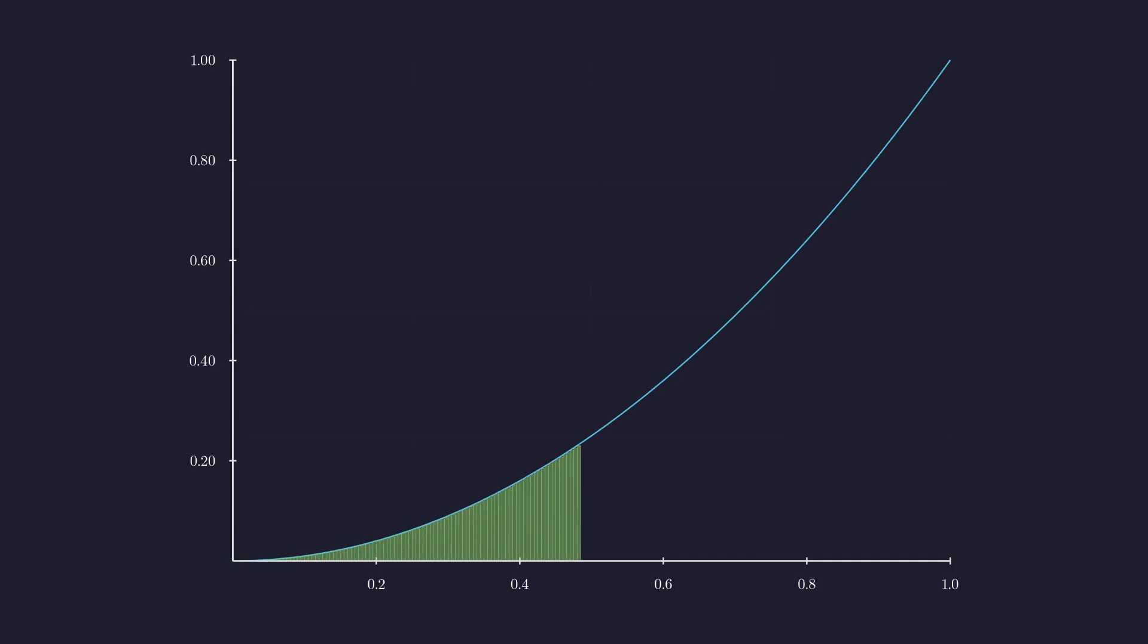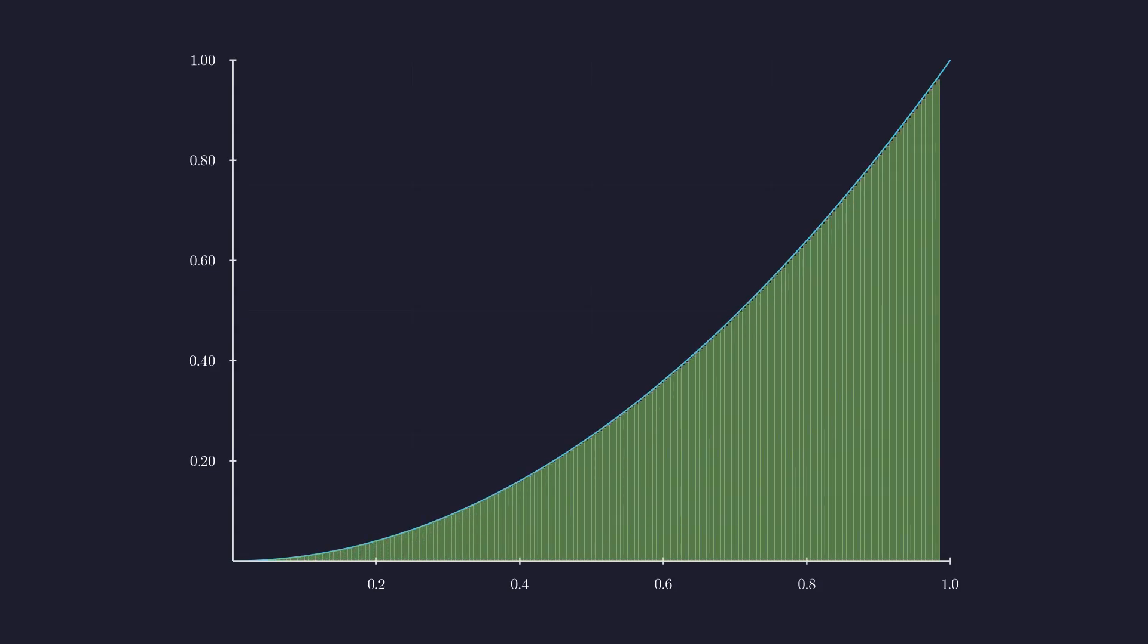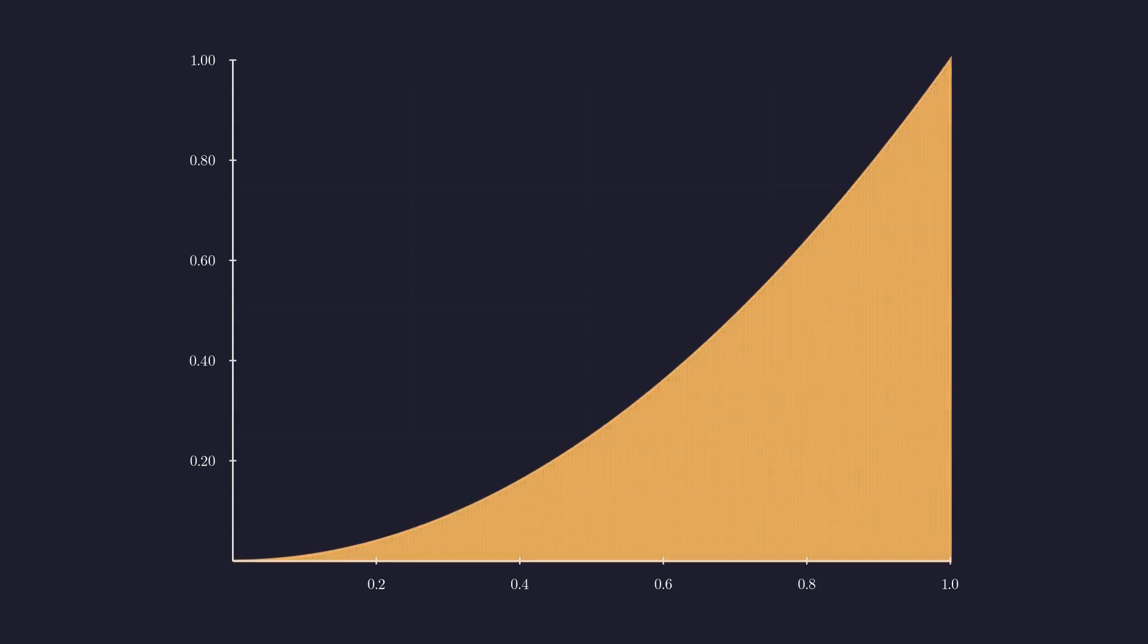5 rectangles. 10, 20, 50, 100, 200. Watch it become perfect. Perfect fill. Exactly one third. We predicted it with infinity.